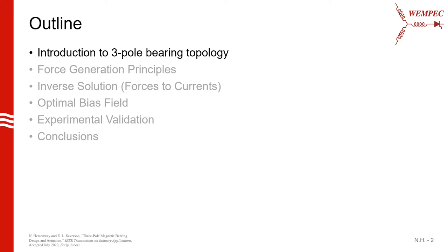We'll then discuss the inverse to that, namely, if you want this desired force, what currents do you need to run to get that force? We'll discuss an optimal bias field, which I'll explain a little more later. And finally, we'll share some experimental validation to show that everything actually works the way it is supposed to.